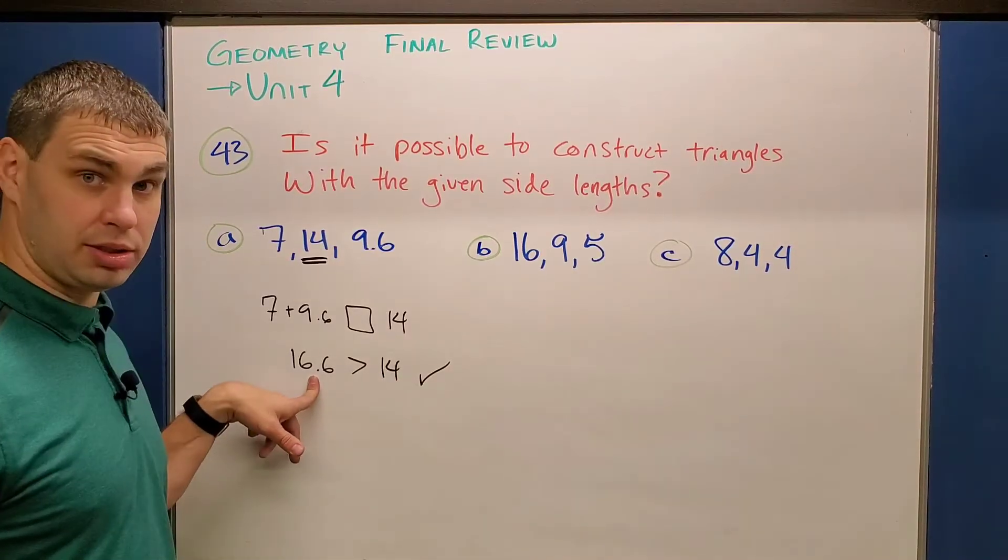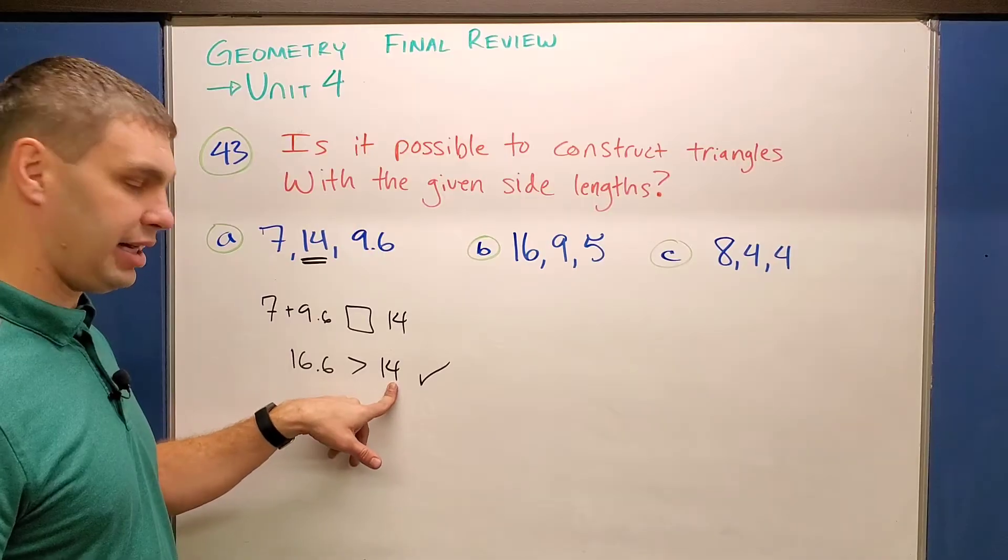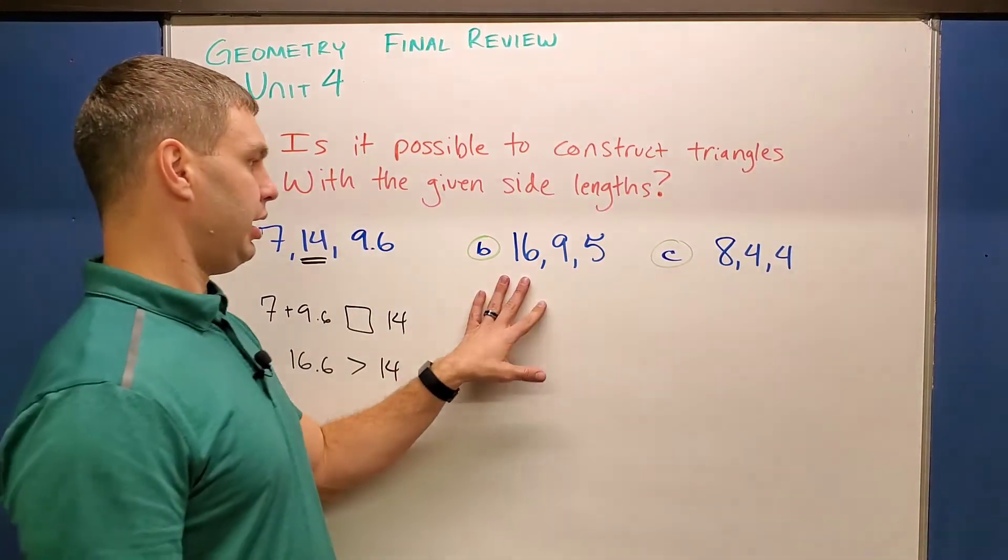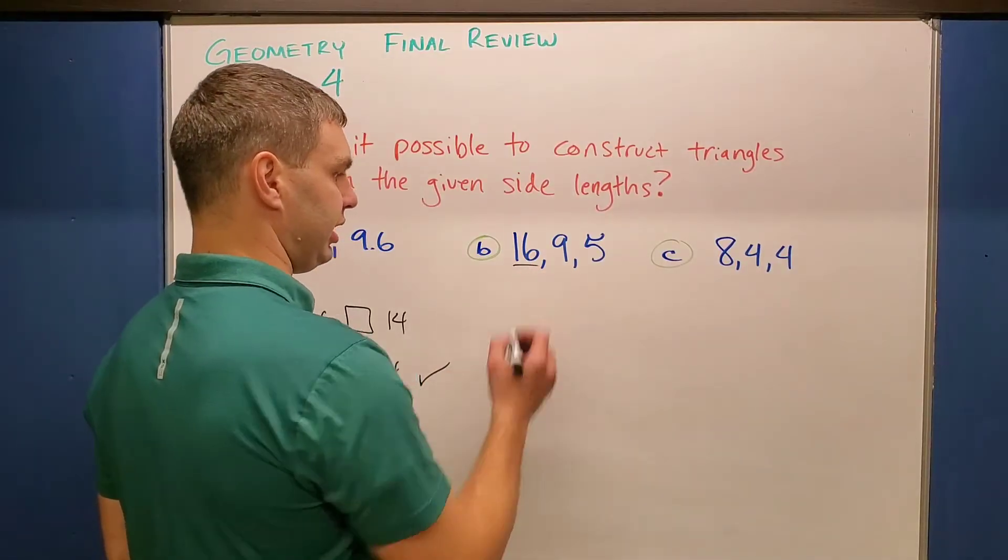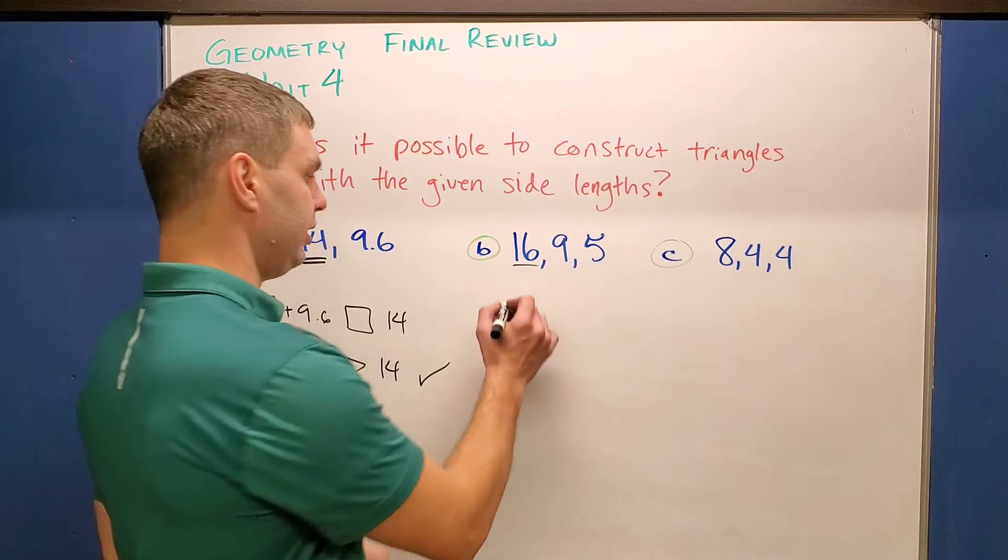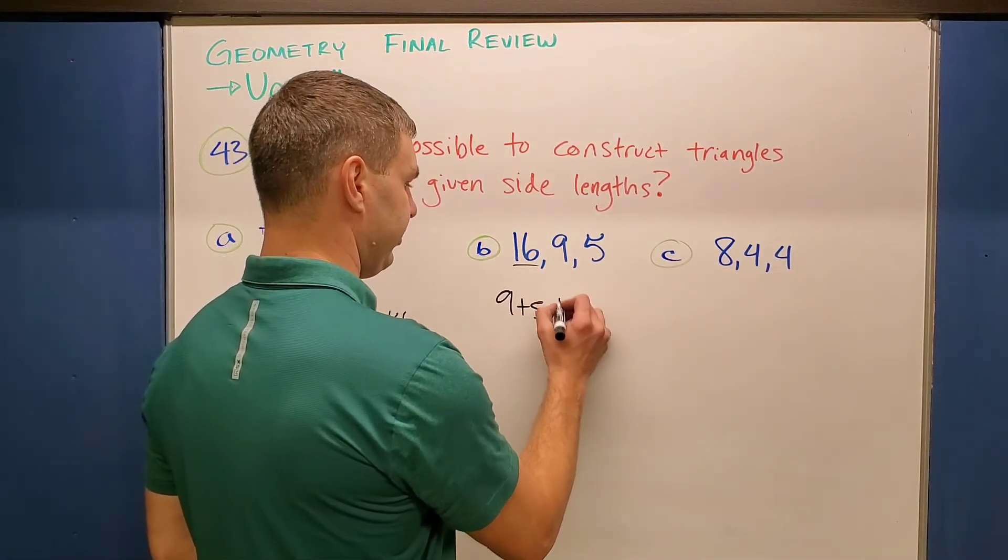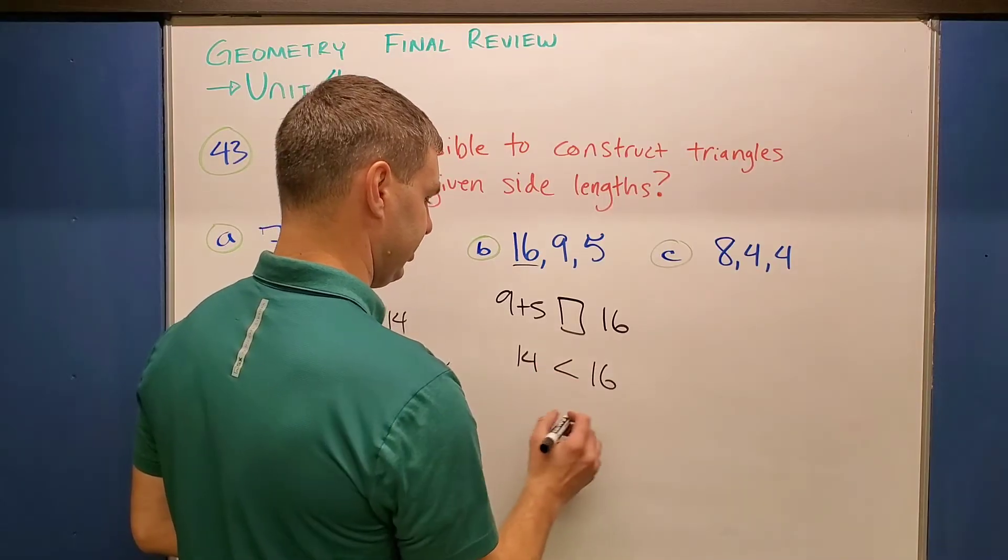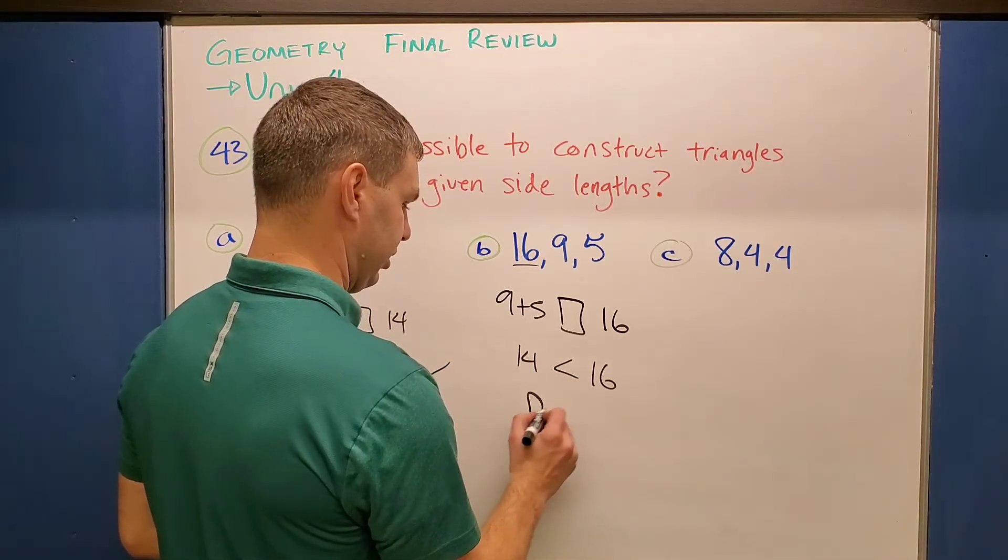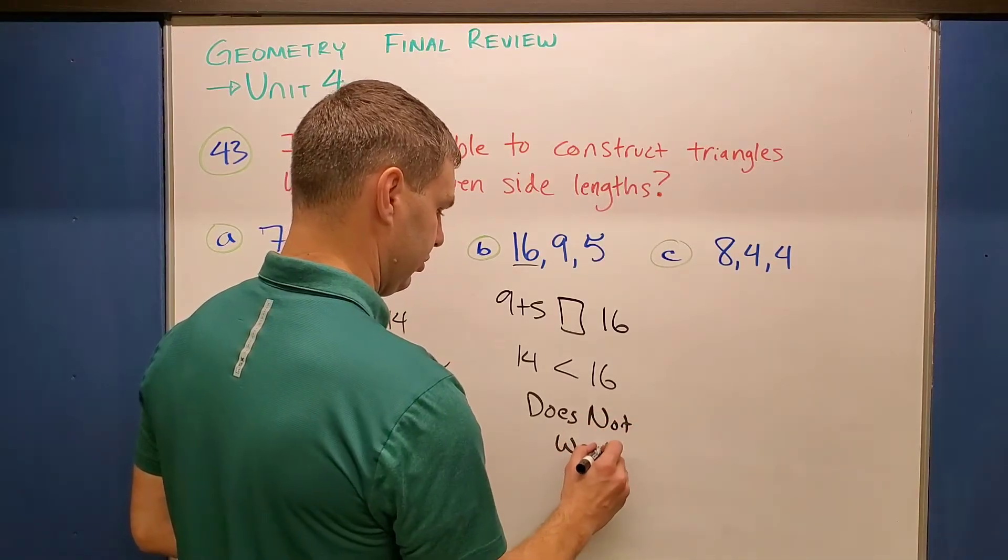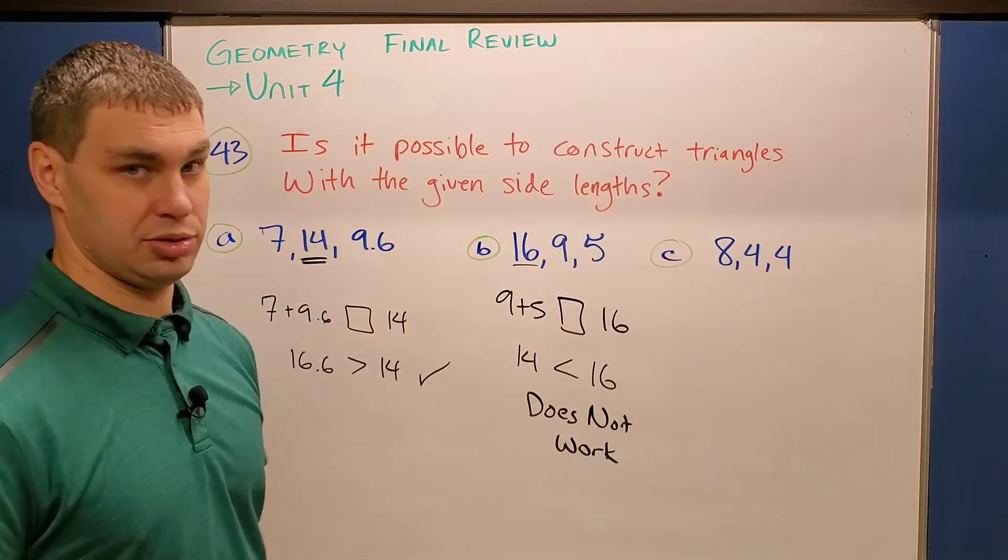If this would have been smaller than our largest side, then this does not make a triangle. And there might be one of those over here. Letter B here, again, my largest side is 16. Nine plus five is 14. So again, nine plus five is 14, and we can say 14 is less than 16. So this one does not work, does not make a triangle.